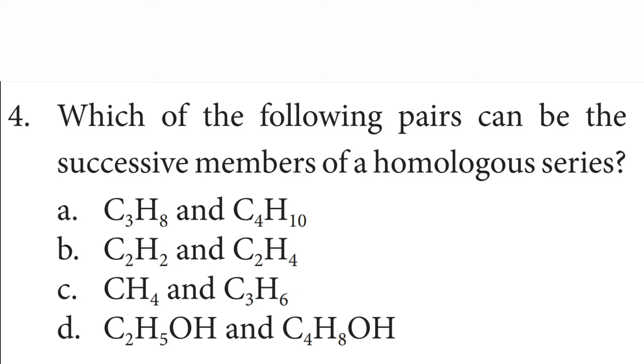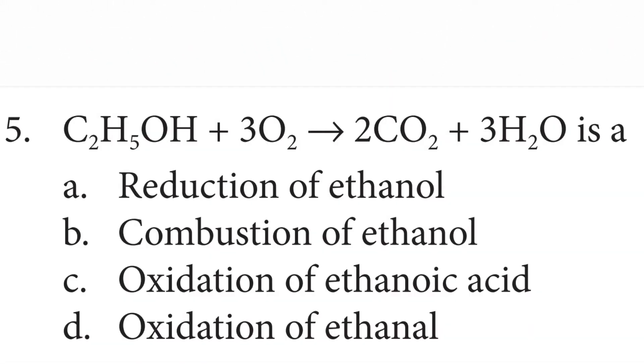Which of the following pairs can be the successive members of a homologous series? Answer: option A, C3H8 and C4H10. C2H5OH plus 3O2 gives 2CO2 plus 3H2O. Answer: option B, combustion of ethanol.